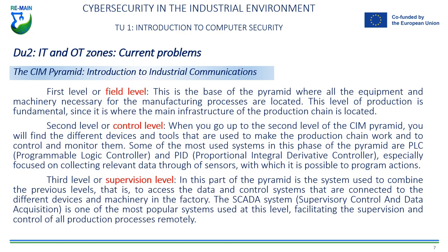First level, or field level. This is the base of the pyramid where all the equipment and machinery necessary for the manufacturing processes are located. This level of production is essential, as it is where the main infrastructure of the production chain is located.